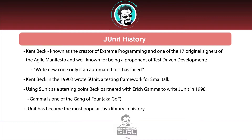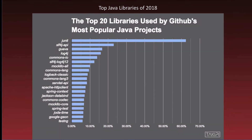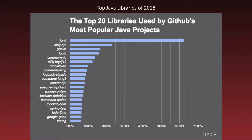JUnit has become the most popular Java library in history. Looking at the top 20 libraries used on GitHub, JUnit is way up there at the top — so frequently used. You can see roughly 65% of projects use JUnit. It's highly popular, and I see it all the time. It has become the de facto standard for testing.